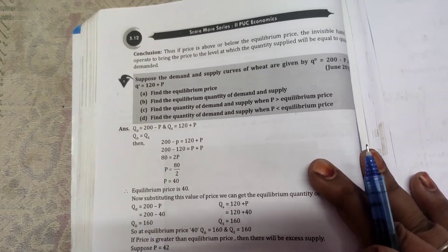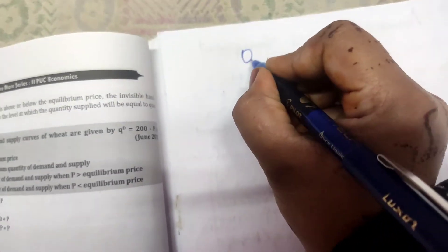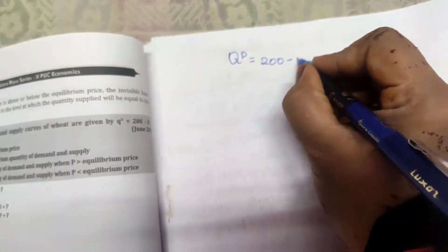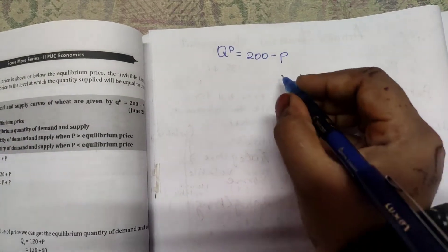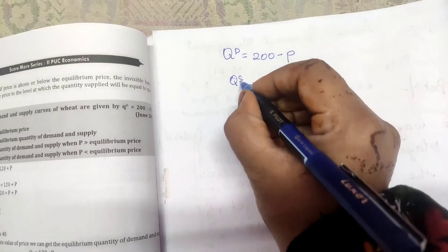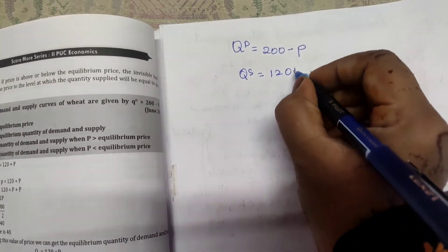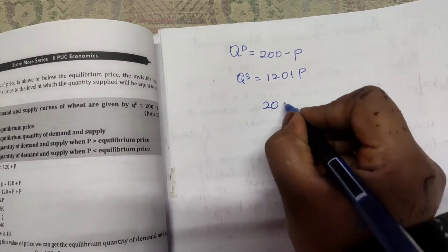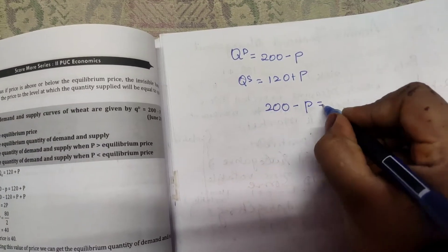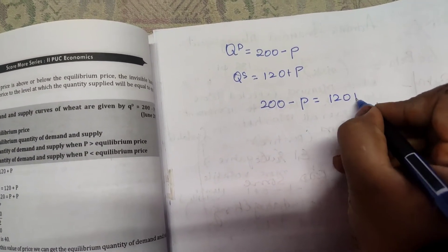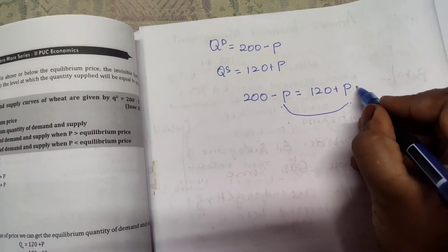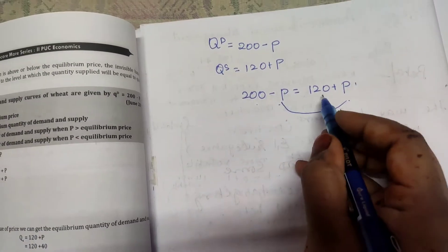It is already given in the question that Qd equals 200 minus P and quantity of supply equals 120 plus P. Now what we are going to do is write the equilibrium condition: 200 minus P equals 120 plus P. When minus P moves to the right side it becomes plus P.